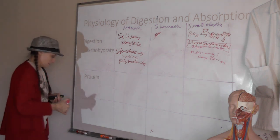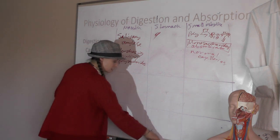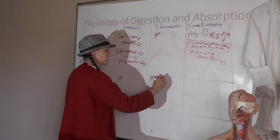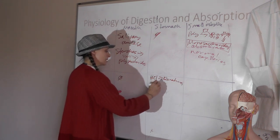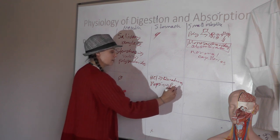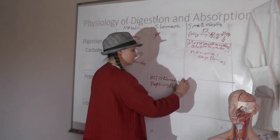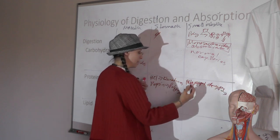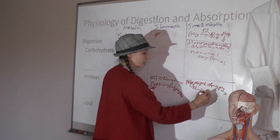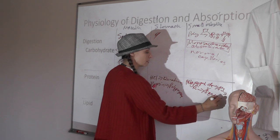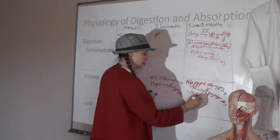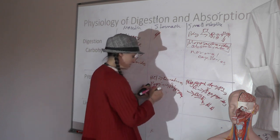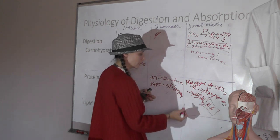For proteins: no chemical protein digestion in the mouth. In the stomach, hydrochloric acid denatures proteins and pepsin, activated from pepsinogen, breaks them into polypeptides. Those polypeptides enter the small intestine where pancreatic juice breaks them into dipeptides to oligopeptides — two to eight amino acids. Brush border enzymes break those down to amino acids, which are absorbed into normal capillaries.